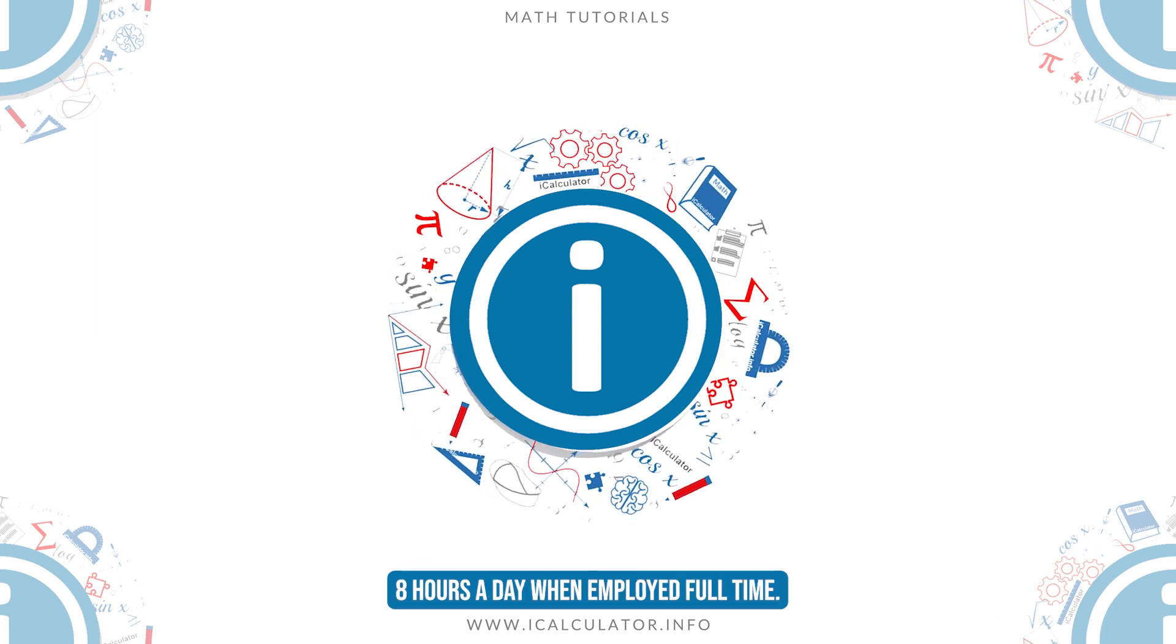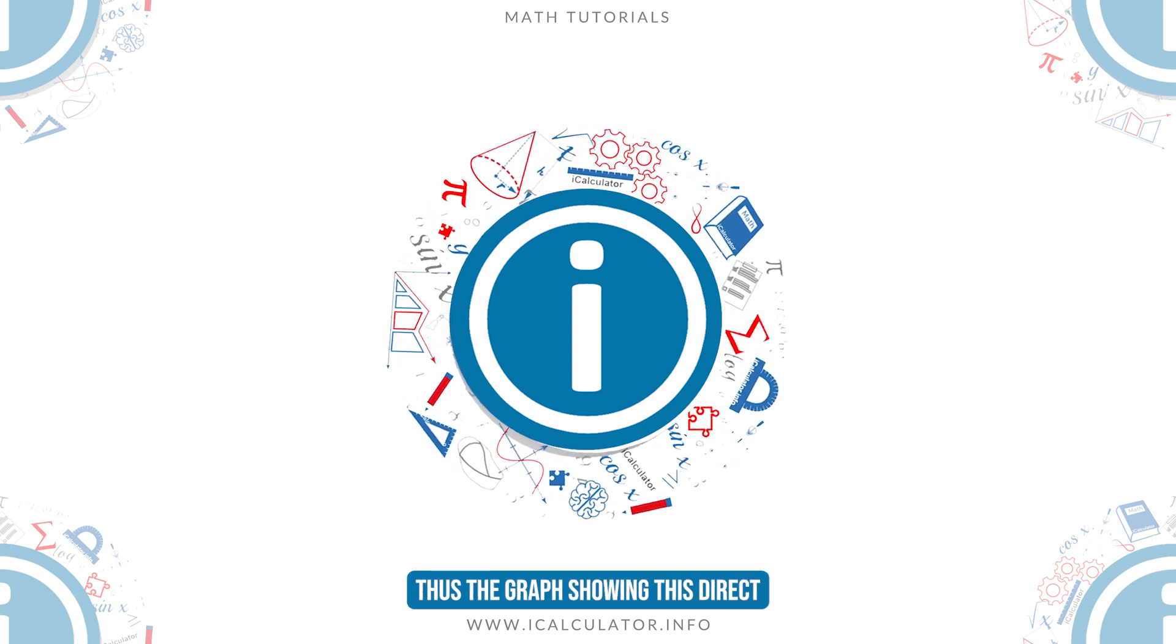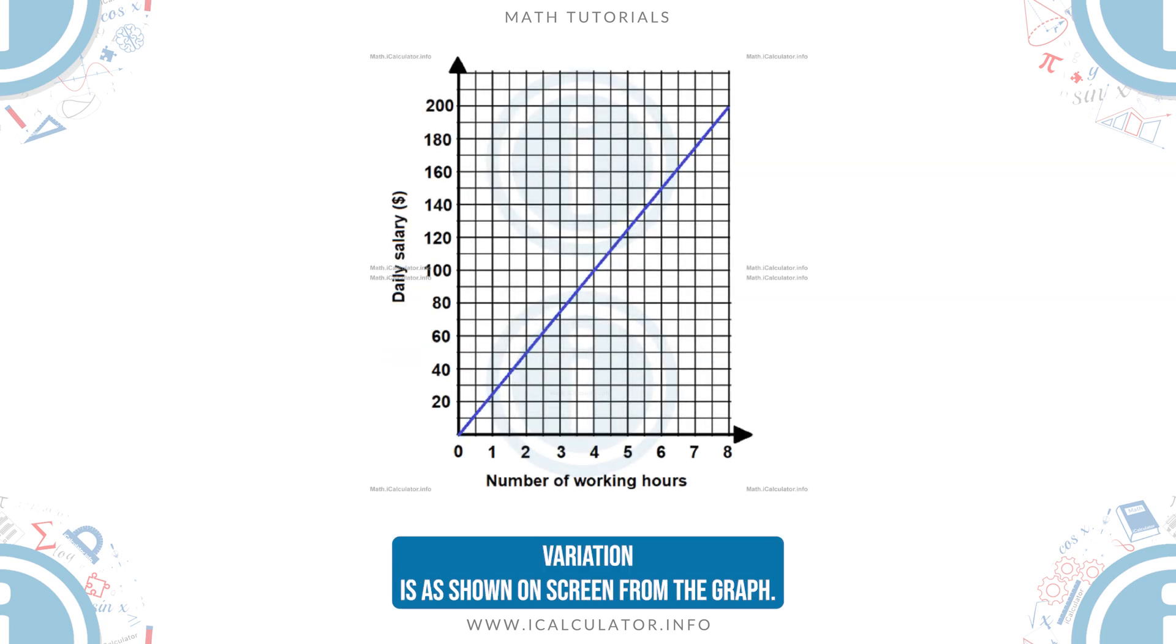Thus, the graph showing this direct variation is as shown on screen. From the graph, it is evident that at the end of the working day, the employee earns $200.